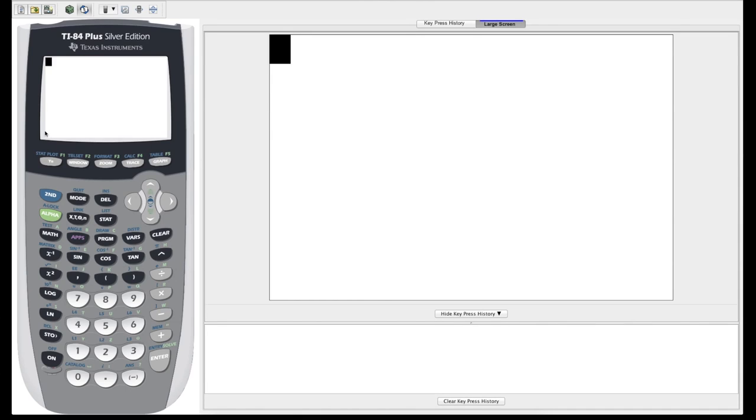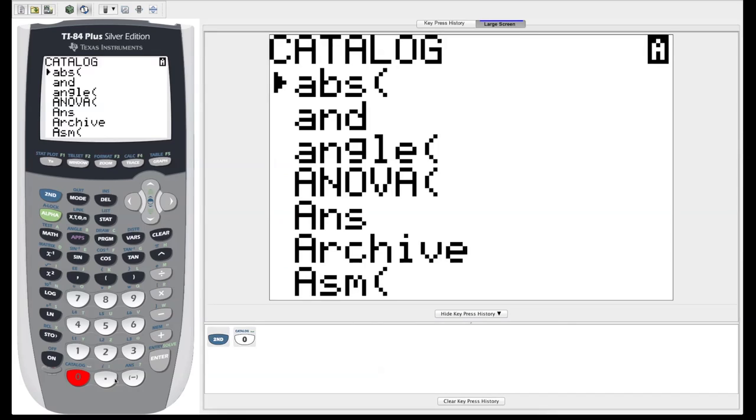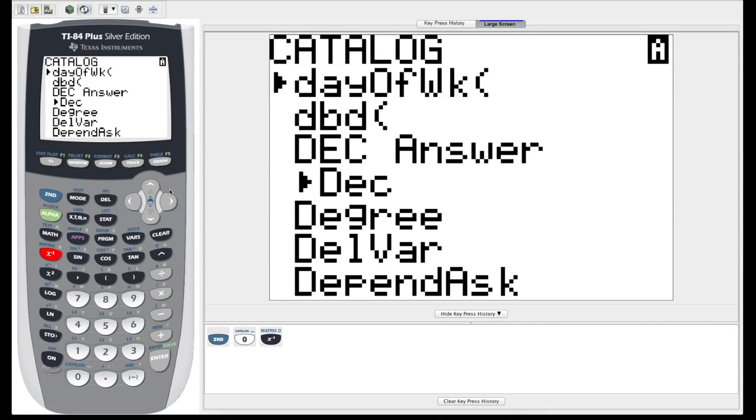So the first one I'm going to show you is a sort of hidden one that you have to find in the catalog. To get to the catalog, we hit the second key, and above the zero you see this word blue for catalog. The thing we're looking for is alphabetical, so it's under D. You can kind of shortcut your way there if you see the green letters above your keys here. If we go over to the X inverse button, you see the green letter D, so let's click that and it'll jump automatically down to D.